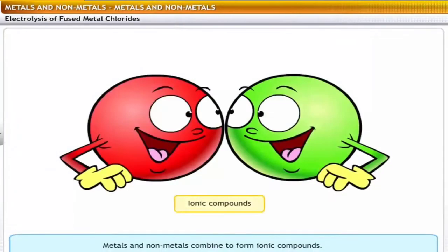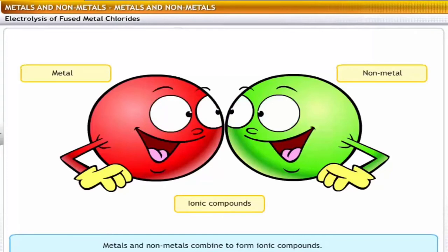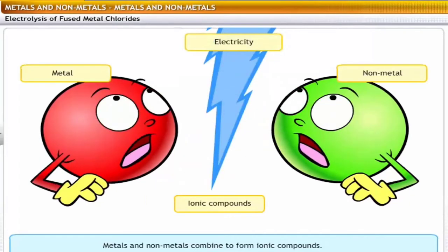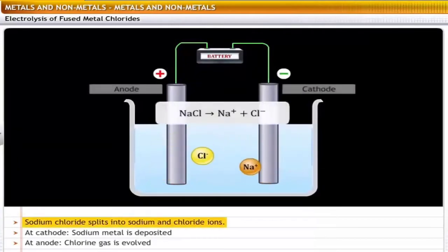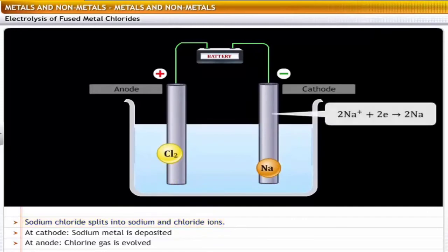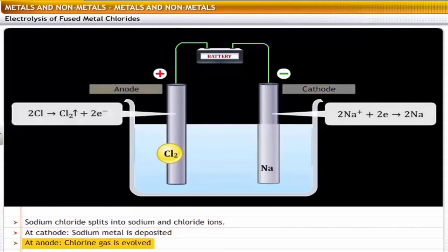In ionic compounds, the forces of attraction between the ions of metals and non-metals are very strong. Therefore, it is difficult to separate the elements in such compounds. You can overcome this force of attraction by passing electricity through it. The process of decomposition of a substance by passing electricity through it is called electrolysis. For example, on passing electricity, sodium chloride splits into sodium and chloride ions — sodium metal is deposited at the cathode, and chlorine gas evolves at the anode.